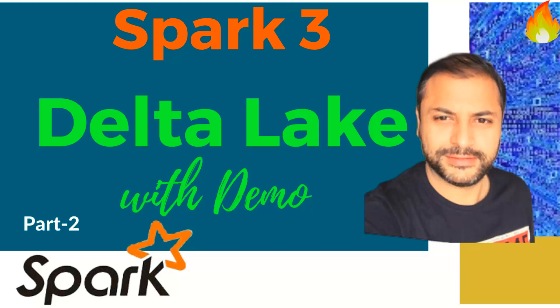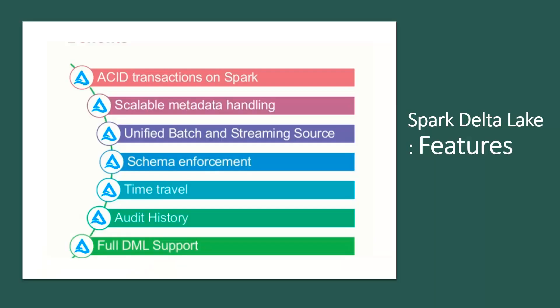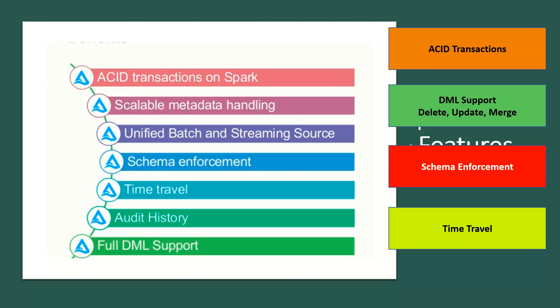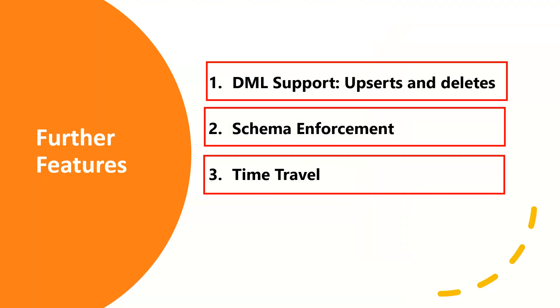So guys, let's start. This is the full list of all the functionalities and features provided as part of Delta Lake. The major ones are ACID transactions in the Spark world, DML support — delete, update, and merge — schema information and schema enforcement at write time, which we discussed in the first video, and time travel. As part of the first video we covered the detailed demo of ACID transactions. In this video let's start with the DML support — the delete, update, and merge functionality provided onto the underlying distributed data storage through the Spark APIs.